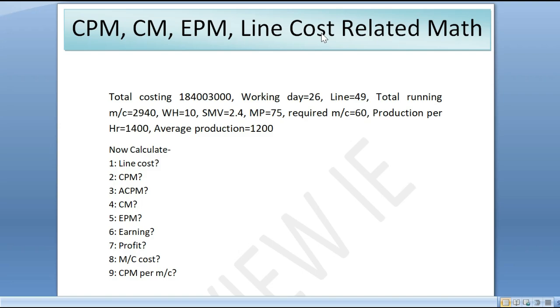In this example, we'll calculate CPM, CM, EPM, and line cost. The first example: Total costing is $184,003,000, working day 26.